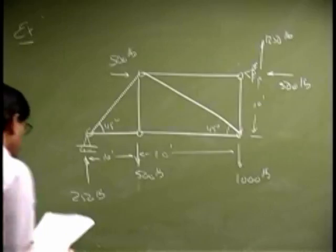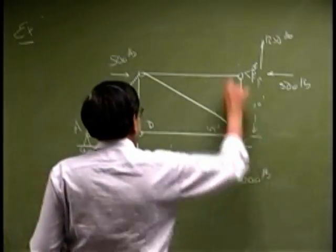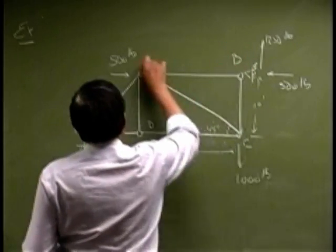Then the joints were numbered as A, D, C, B, and E.